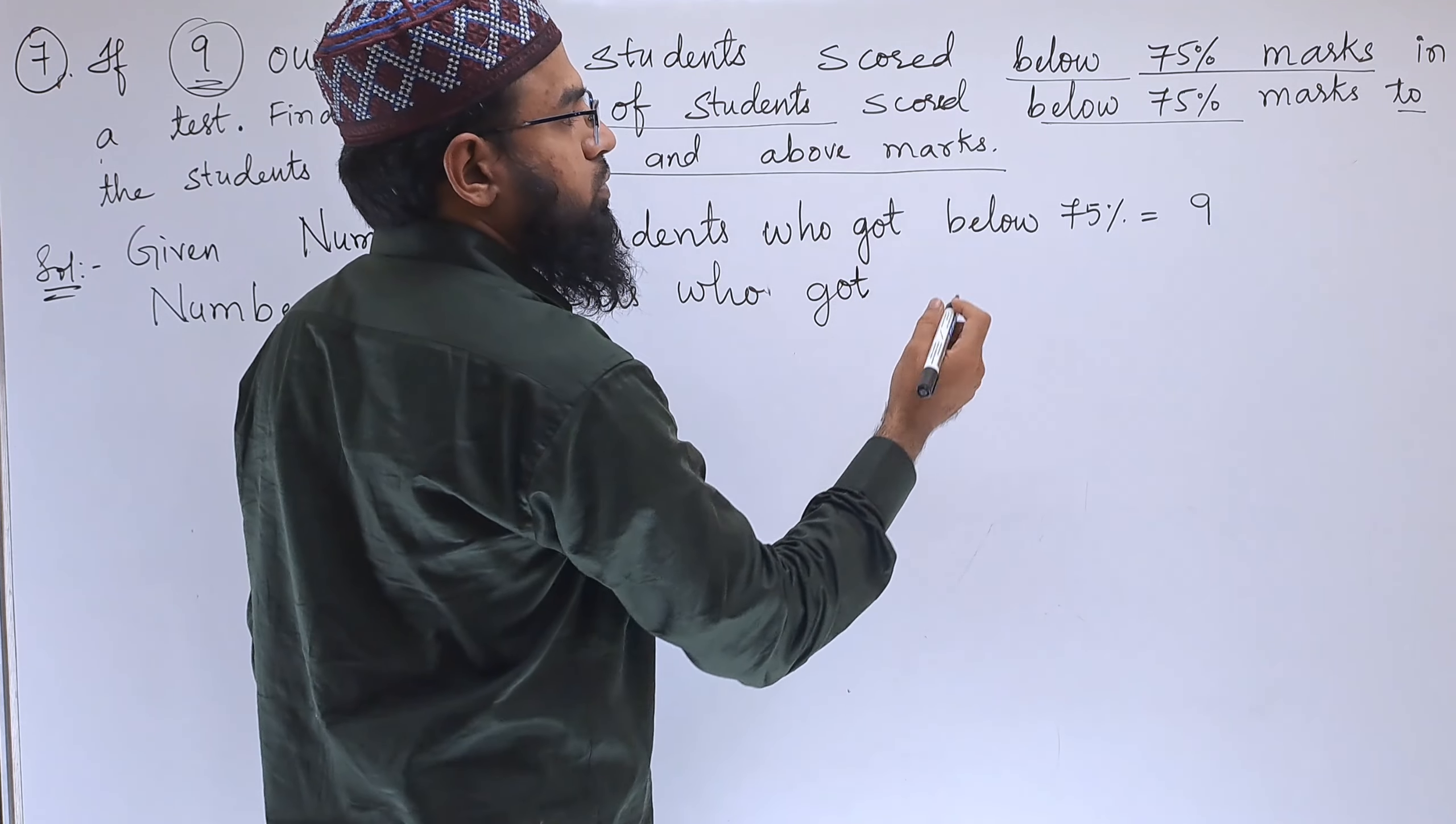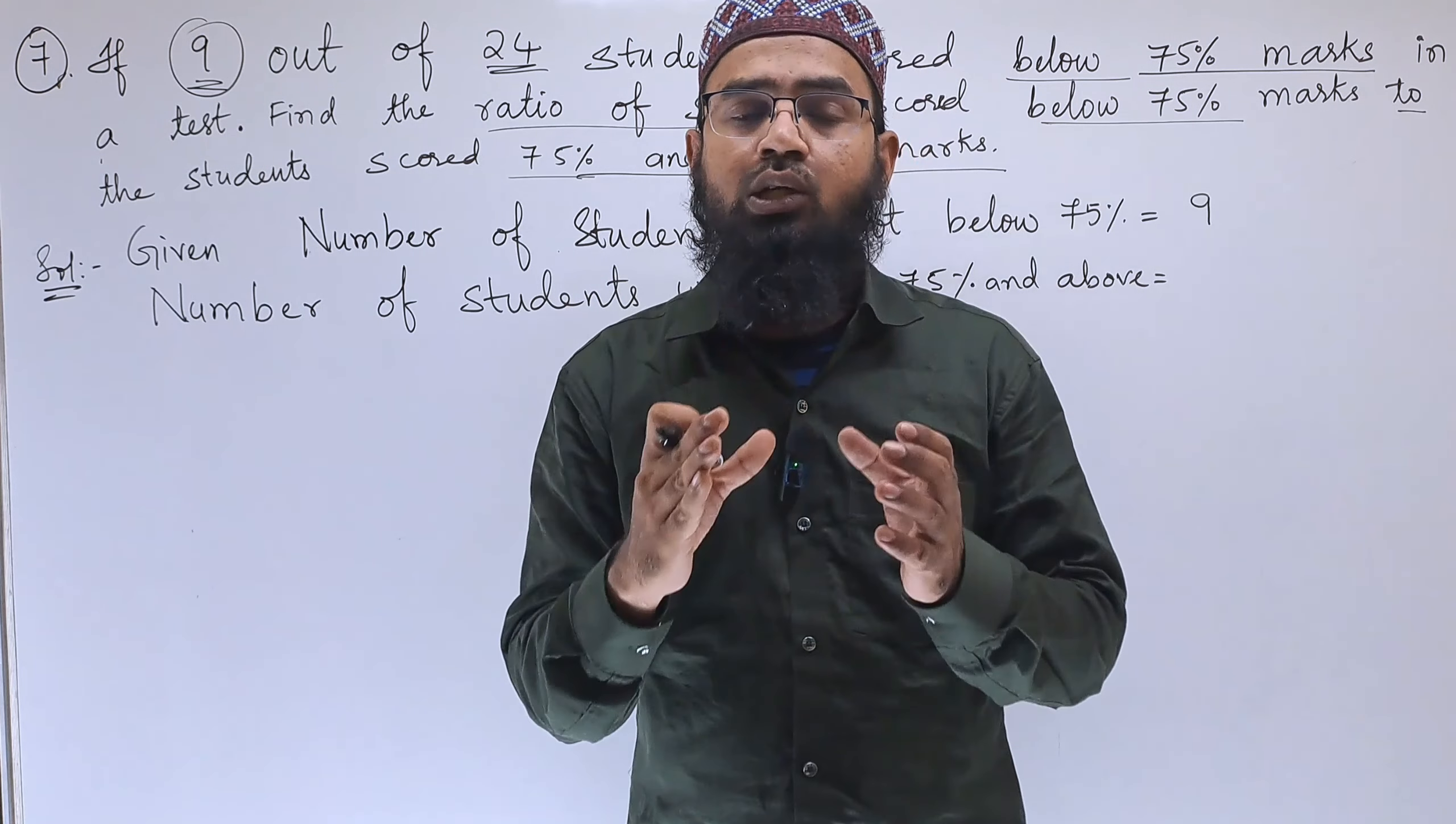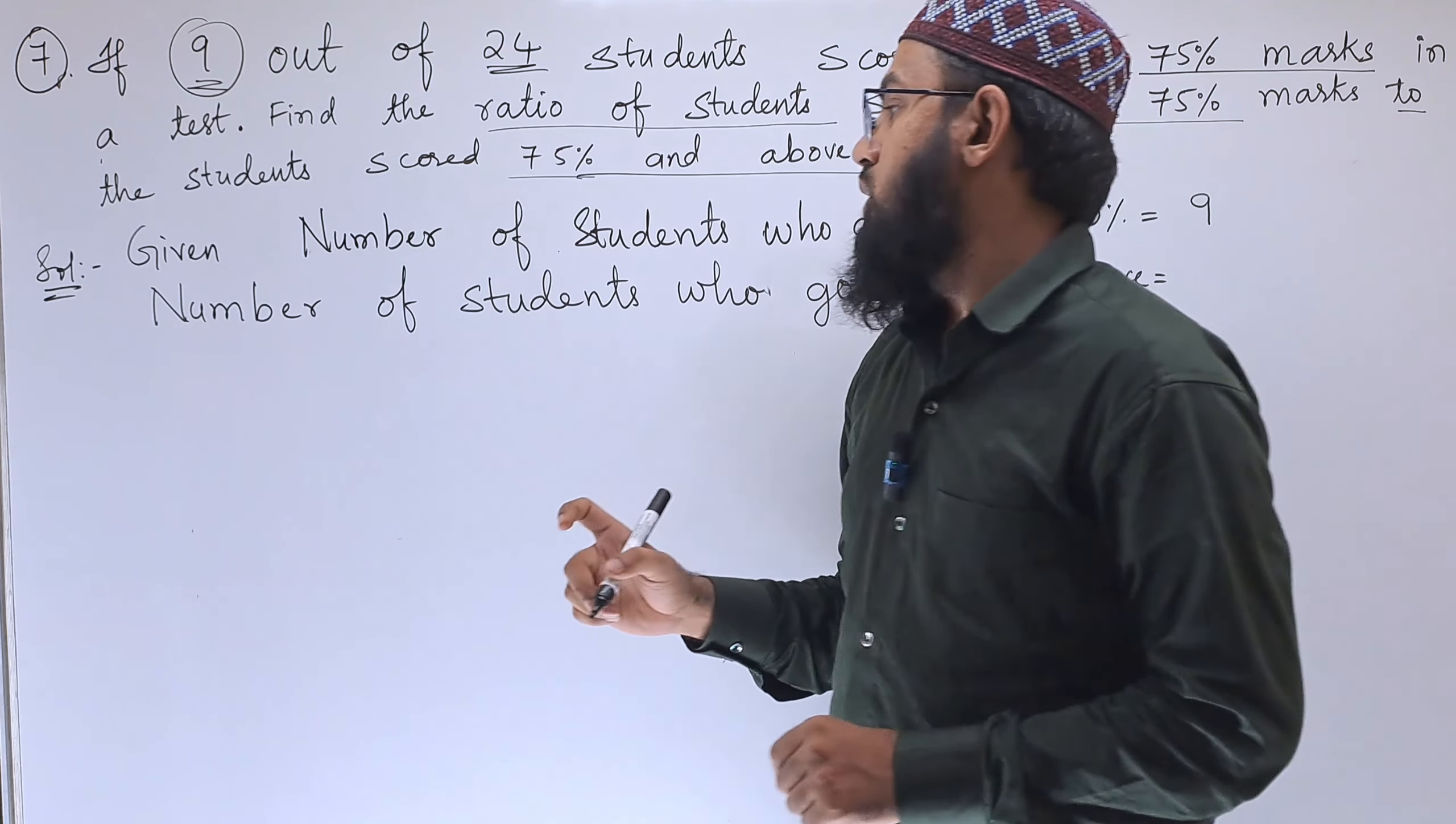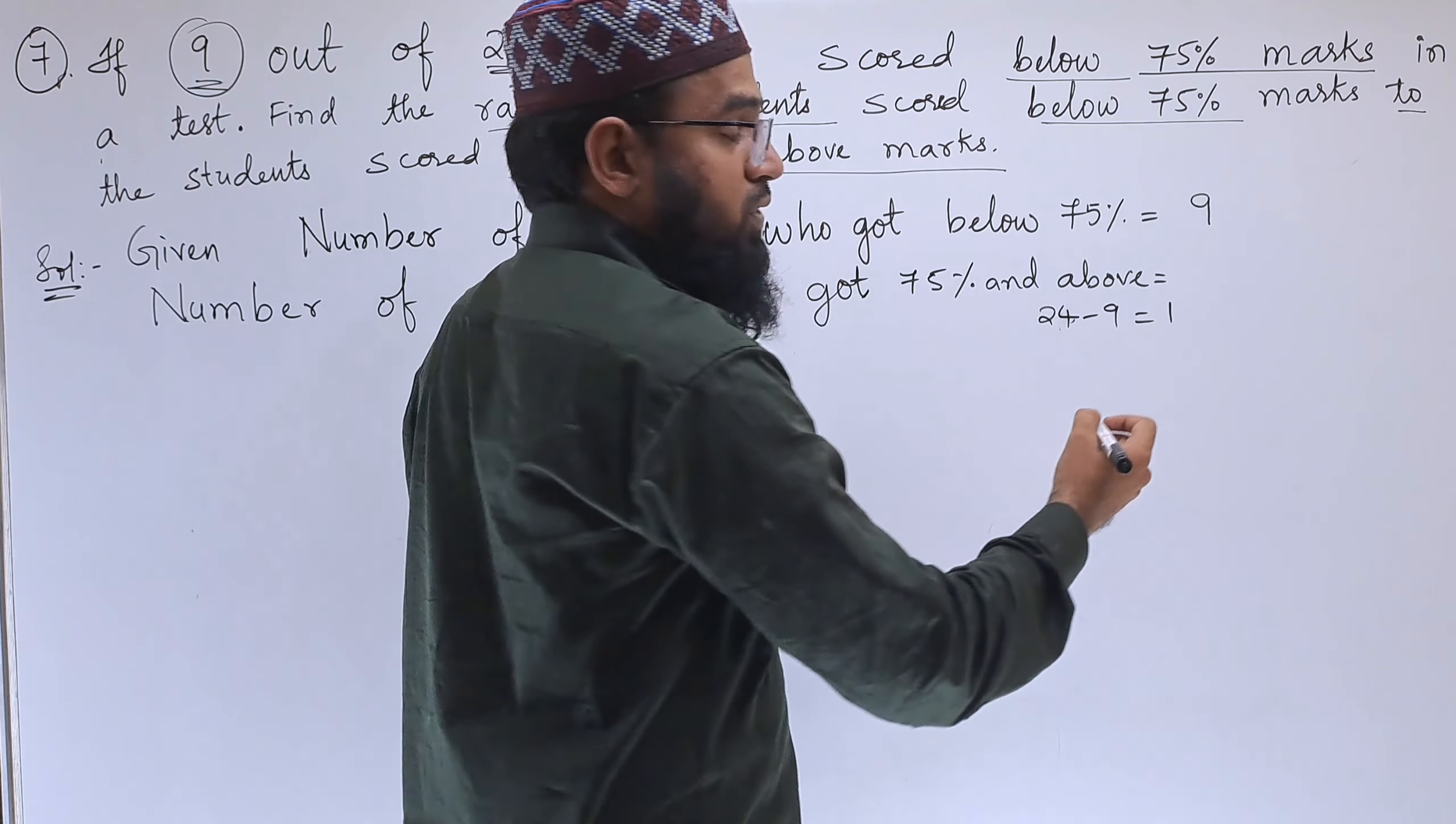Number of students who got 75 percent and above: to find out 75 percent and above, we need to subtract 9 from the total. Since 9 is the below 75 percent, we will subtract 9 from 24 to get 75 percent and above. So we can write 24 minus 9, that is 15.